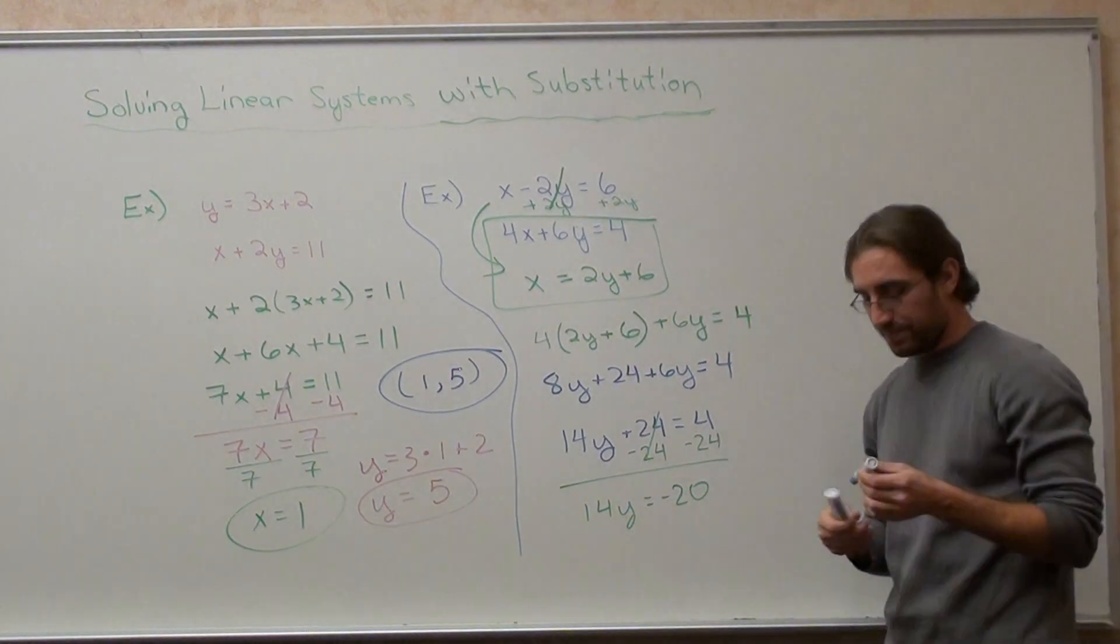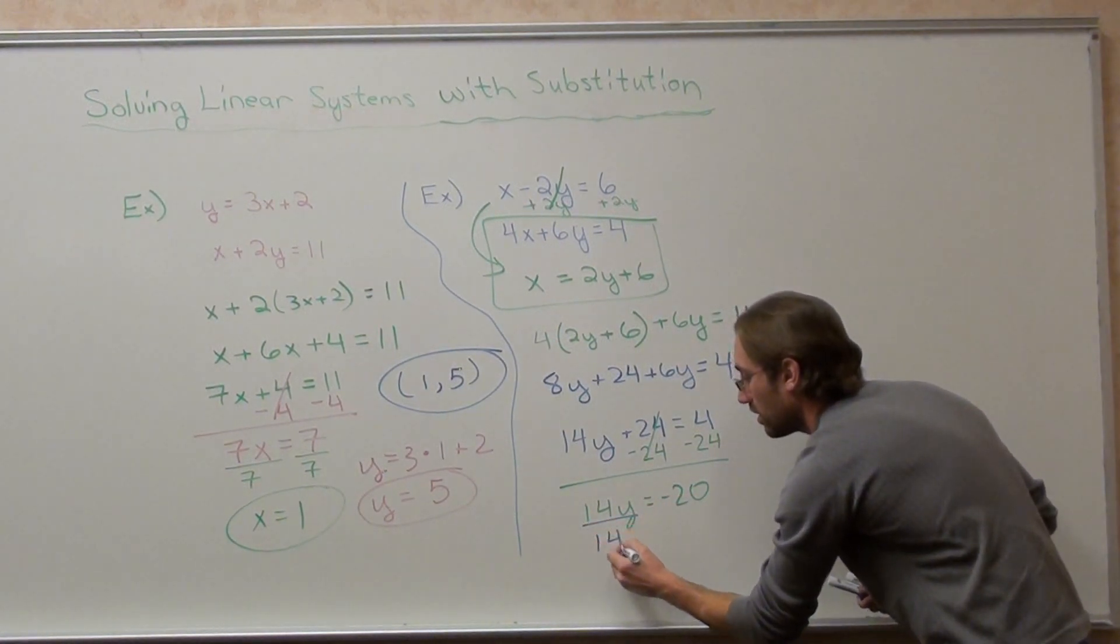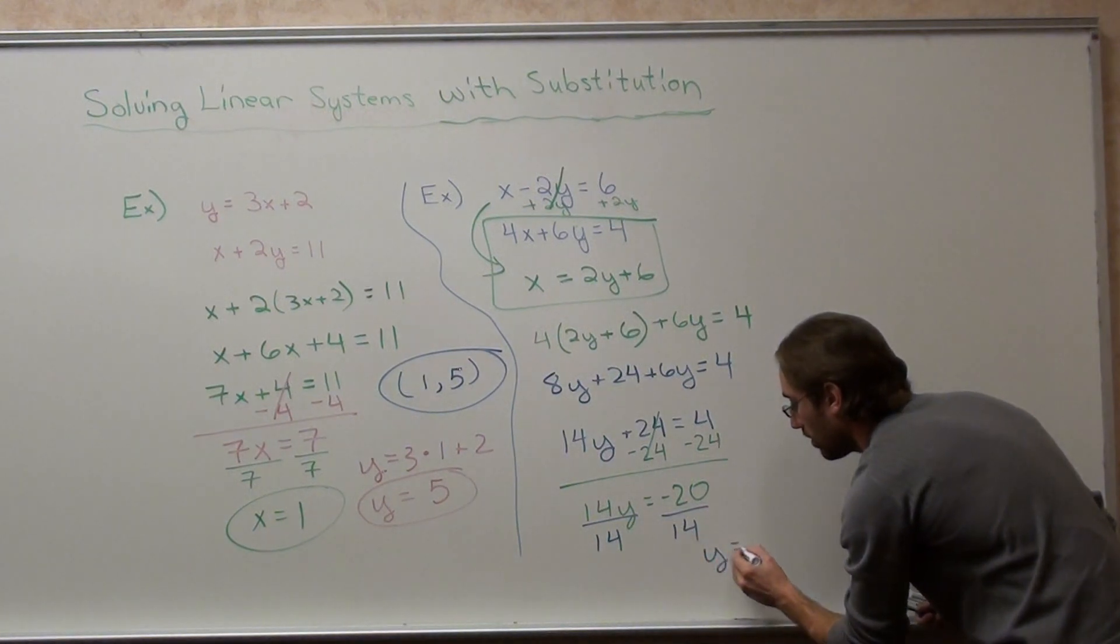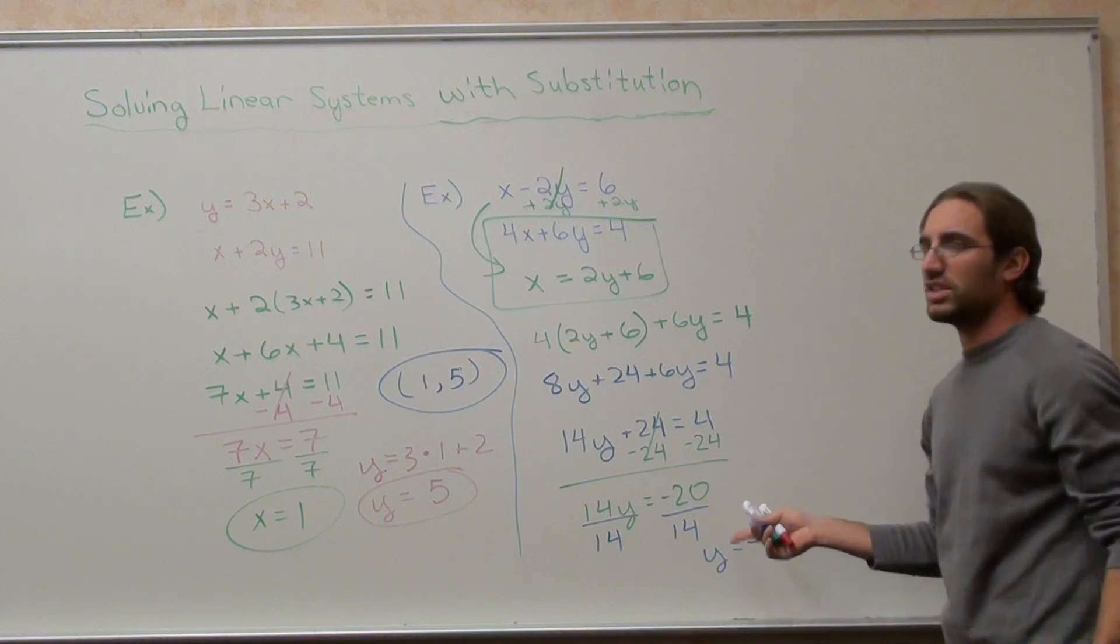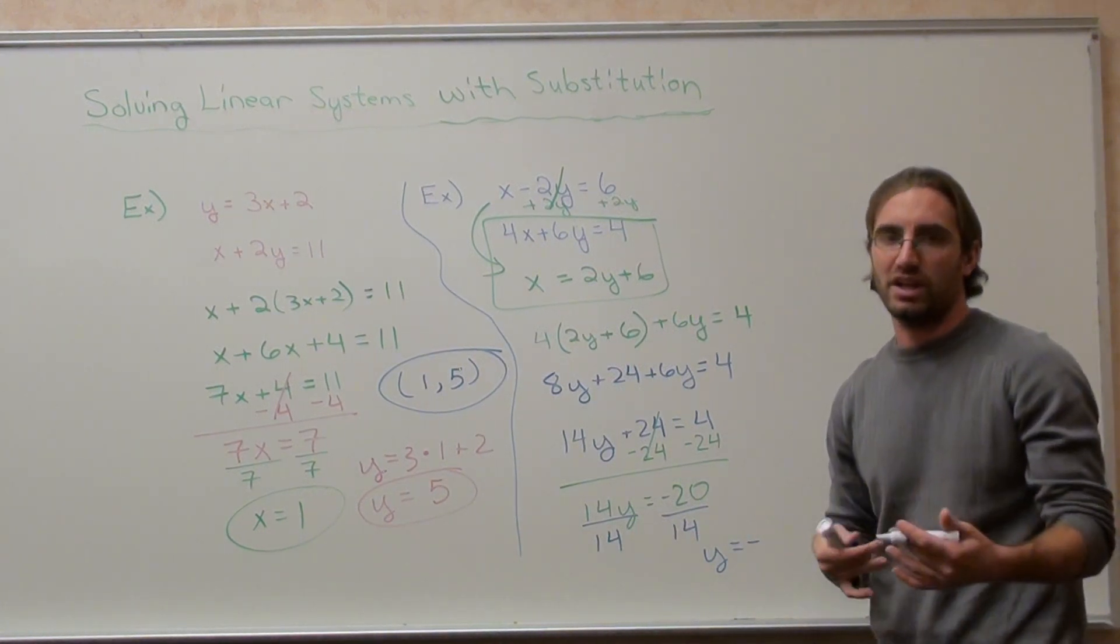14y equals negative 20, divide by 14 on both sides. y equals a negative divided by a positive is negative. We're not going to leave this as 20 over 14. What is 20 over 14 reduced to? It's 10 over 7.